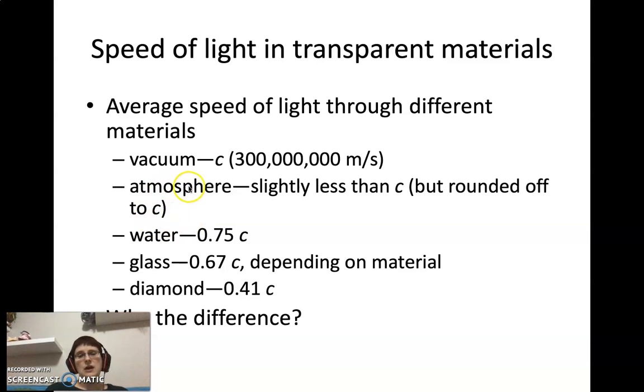And then when we have light travel from the atmosphere into water, it's actually going to slow down. You can see it's about three quarters of the speed of light in a vacuum. So it's going to slow down. Then when we go into something like glass, so if we go from the air or atmosphere into glass, we're going to slow down again. So it's about two thirds the speed of light in a vacuum. Depending on the material, that's roughly about what it turns into. And then if we actually have light travel into a diamond, we get down to 0.4 or four tenths the speed of light. So then the question is, why is there a difference?